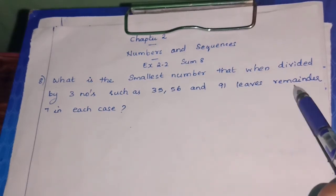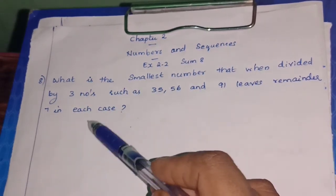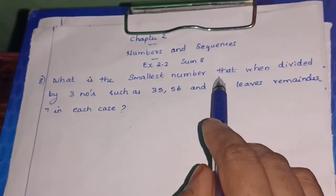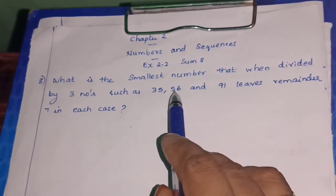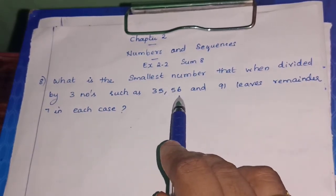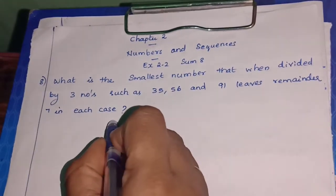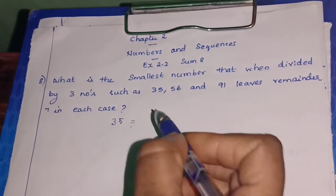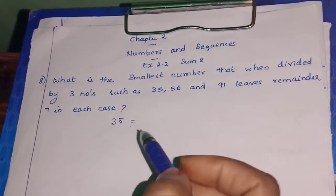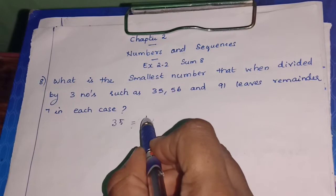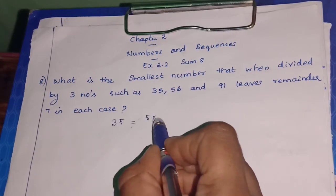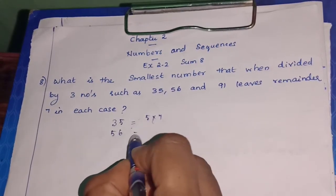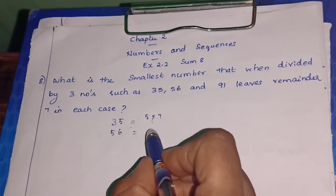It leaves a remainder of 7 in each case. So now we find the LCM of 35, 56, and 91. How will you express 35 using prime factors? Because they are small numbers, you can easily say 35 is 5 × 7. Next, 56 — how will you express it? Actually, 8 × 7.